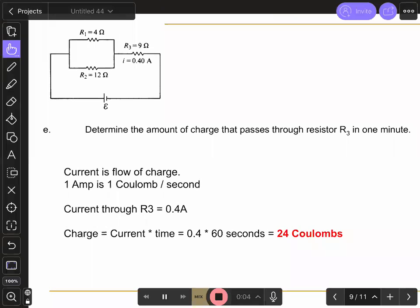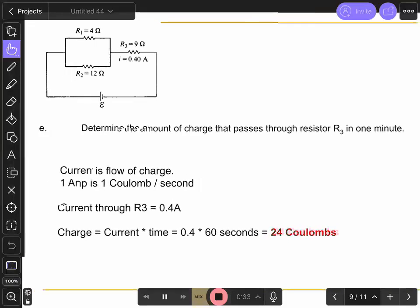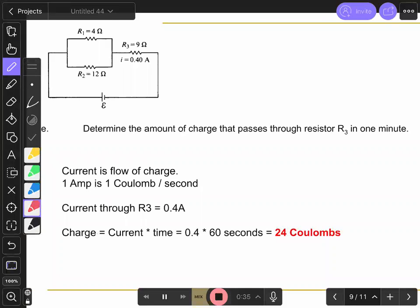All right, so the amount of charge that passes in one minute. Well, what's the definition of current? Nathan, what do you think? Benjamin, you there? Yeah. Is current like the rate at which charge passes through per unit? Absolutely. So current is, in this case, one amp is one coulomb per second. And so if we're trying to find the amount of charge that passes in one minute or 60 seconds, we're going to take the current 0.4 amps, we're going to multiply it by 60 seconds, and we're going to get 24 coulombs.